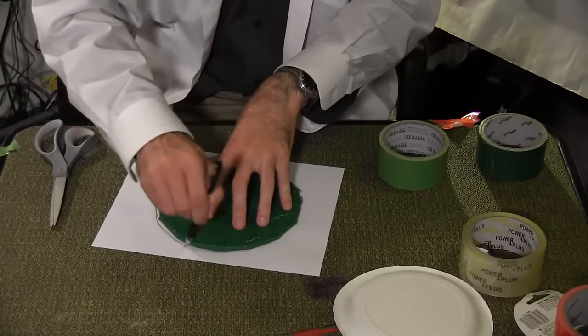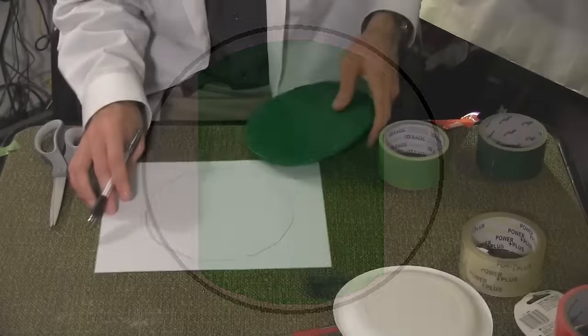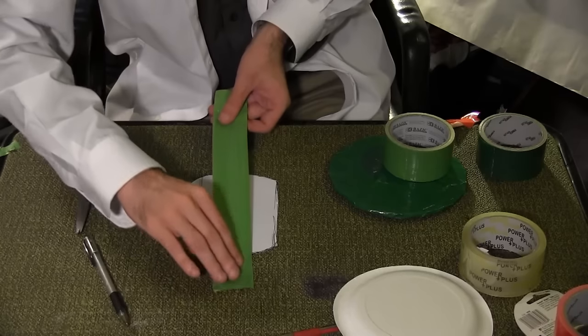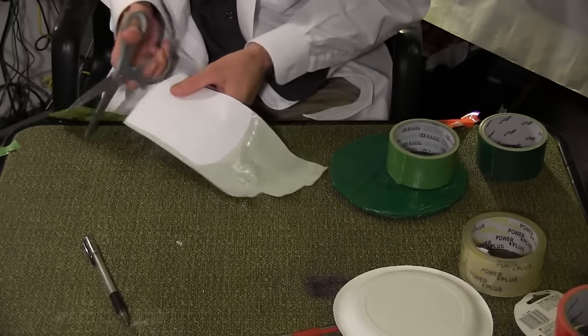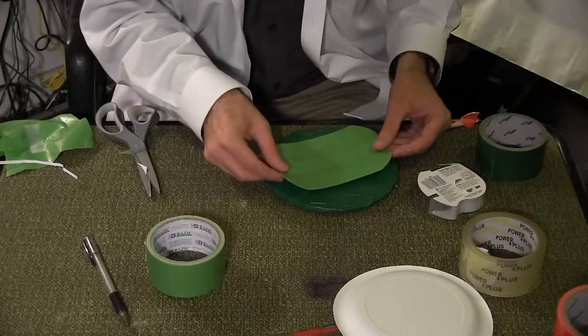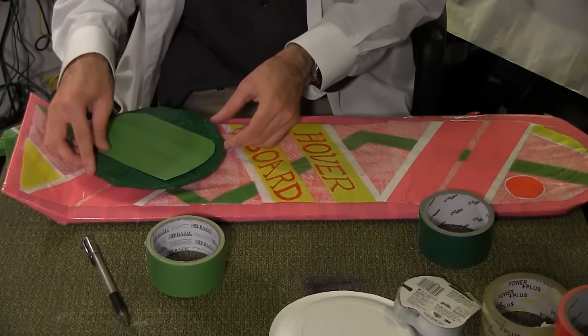Draw another circle on a piece of cardstock and draw this shape within it. Cut the piece out and cover it in the light green duct tape. Cut away the excess tape. Tape the light green piece to the dark green piece and use adhesive foam squares to attach the whole thing to the hoverboard.